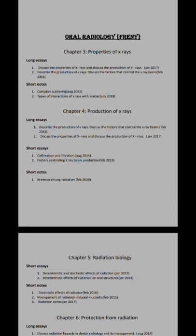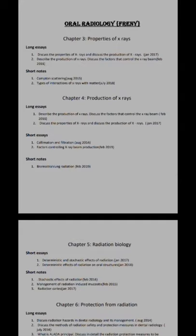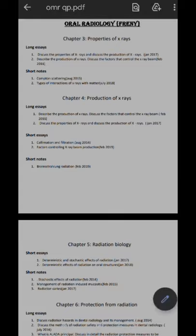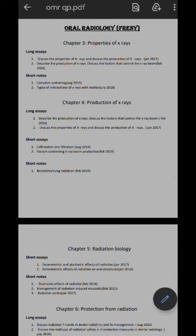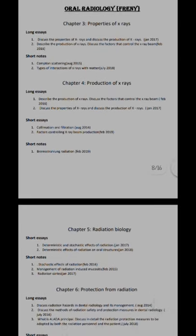Both sub-chapters are almost similar. For these, first write about the properties of X-rays — similar to properties of electromagnetic radiation — such as its capacity to ionize matter, interaction with photographic film, how it travels, its speed, and related things. Then for production of X-rays, draw a neat labeled diagram of the X-ray tube and explain the controls, circuits, and related components.